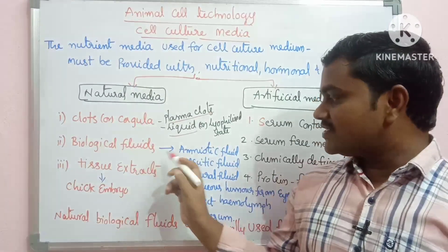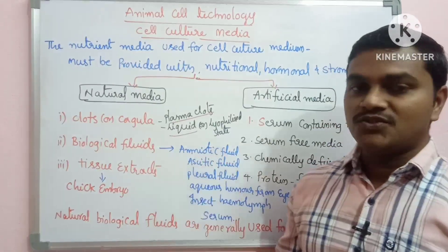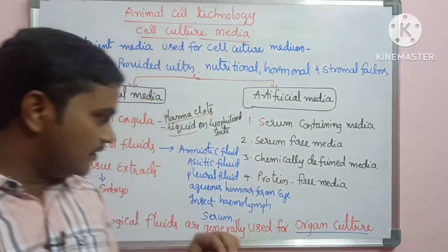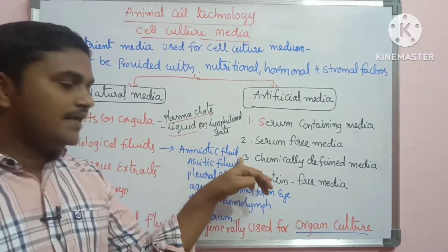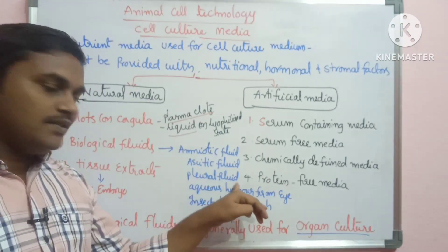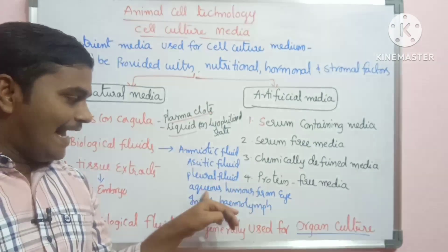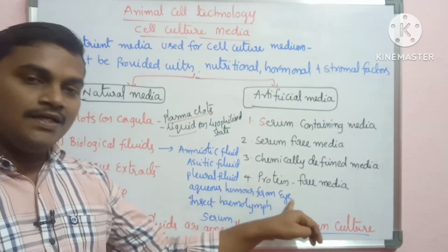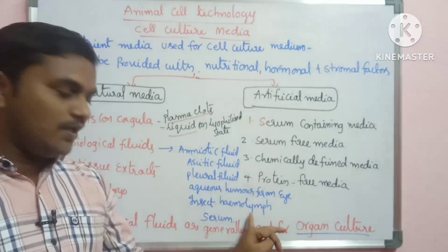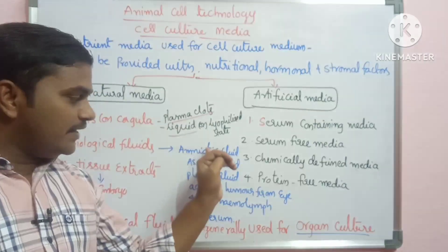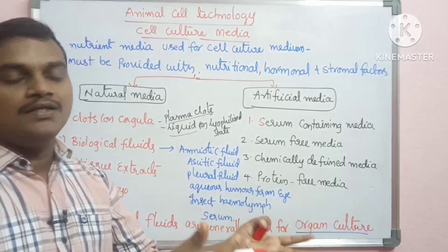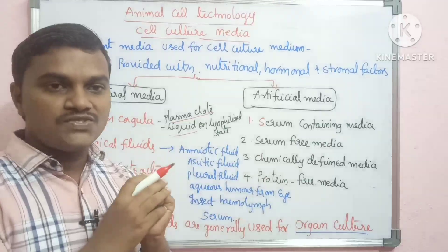If you have biological fluids, these can be found in human beings. Examples include amniotic fluid, ascetic fluid, pleural fluid, aqueous humor from the eye, insect hemolymph, and serum. Biological fluids are things in a body that can be removed.